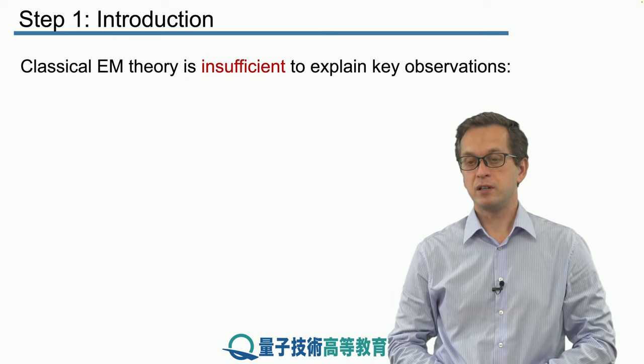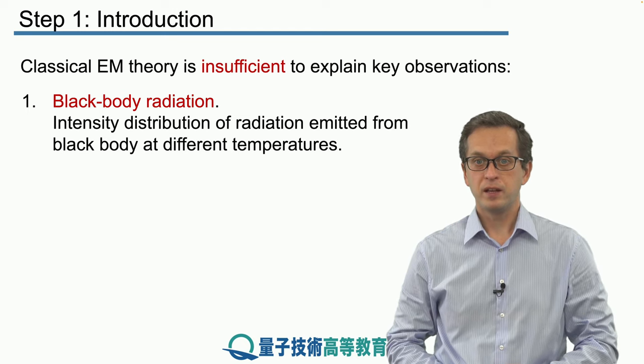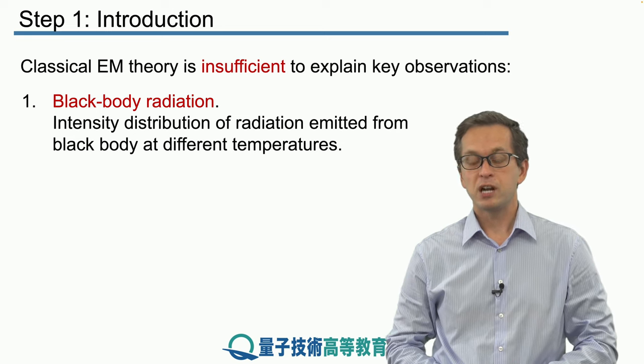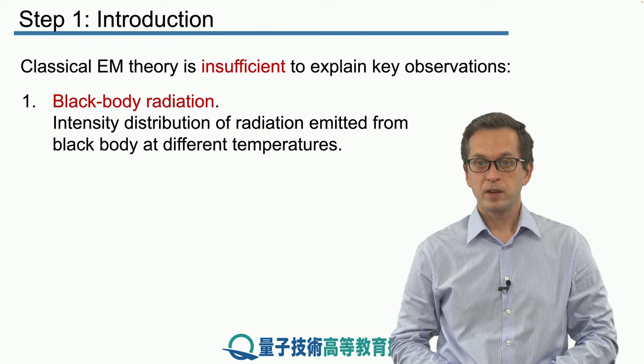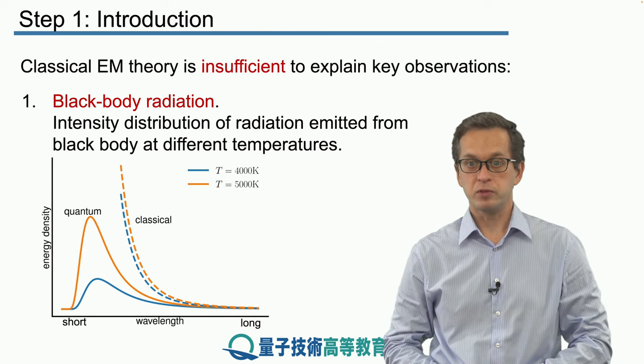Some of these observations were, one, black body radiation. This is the scenario where we look at the intensity distribution of radiation coming from a black body at different temperatures. In particular what people predicted was not at all what they observed.